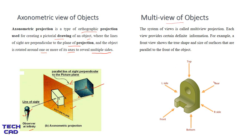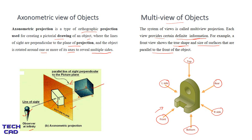In multi-view, we mainly have six views of any object and each view provides definite information. For example, the front view shows the true shape and size of surfaces parallel to the front of the object. We have a top view, rear or back view, right side view, left side view, front view, and bottom view — this is a multi-view of the object. When the observer is at the front it sees the front view; moving to the right gives the right side view; moving left gives the left side view. So we have six views in multi-view orthographic projection.